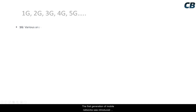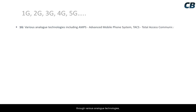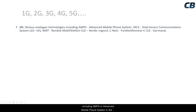The first generation of mobile networks was introduced through various analog technologies, including AMPS (Advanced Mobile Phone System) in the US, Total Access Communication System in the UK, NMT for the Nordic region, and CNETS in Germany.